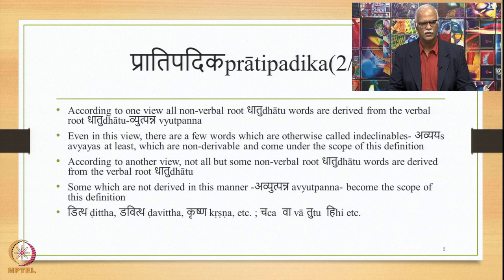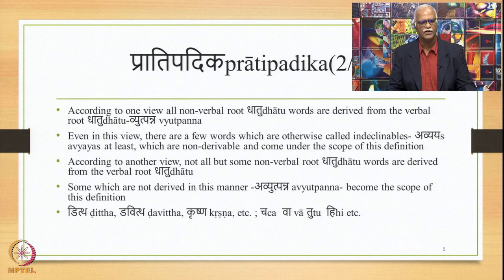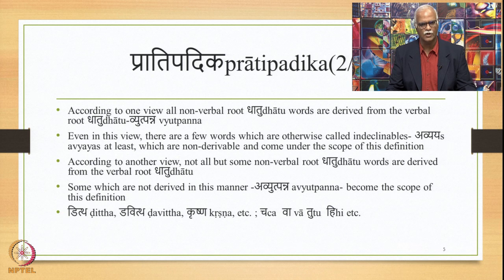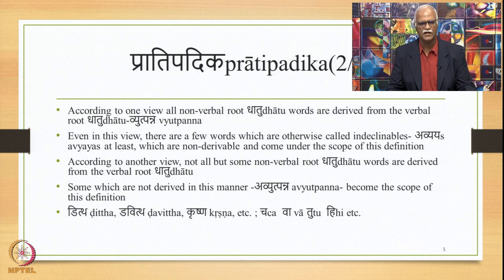According to another view, not all but some non-Dhatu words are derived from the verbal root. Some which are not derived in this manner — called Avyatpanna — become the scope of this definition. For example, Dittha and Davitha are not derived from any verbal root. Krishna is also not derived from any verbal root by some scholars' view, making it Avyatpanna and within the scope of this definition. Also Ch, Va, Tu, and He, which are indeclinables, can become scope of this definition.